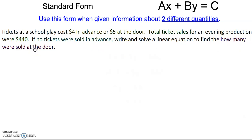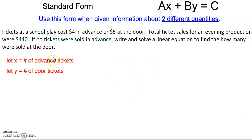So as we read through this problem, we figure out that the two things it's talking about are the number of advanced tickets and the number of door tickets. It costs $4 in advance and $5 at the door. The total ticket sales were $440.